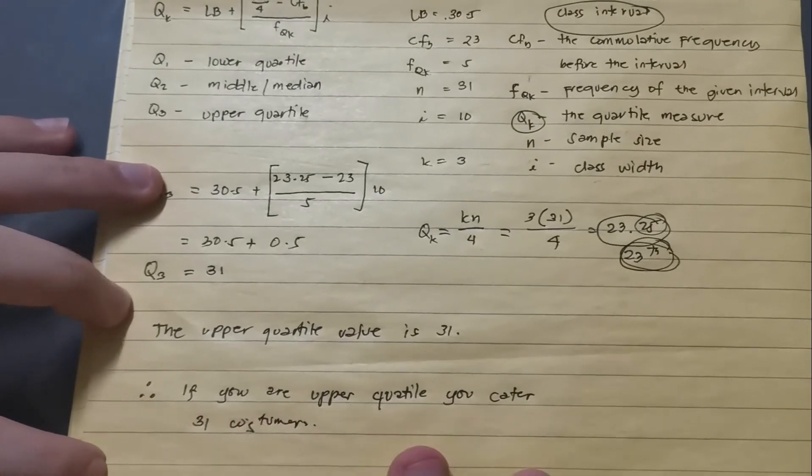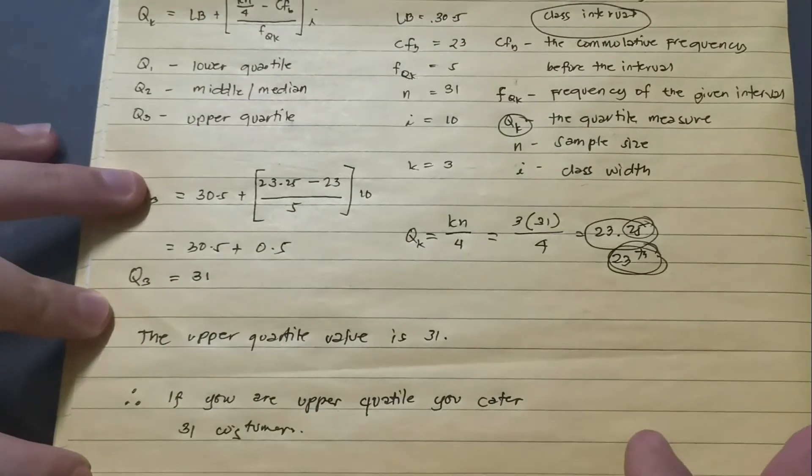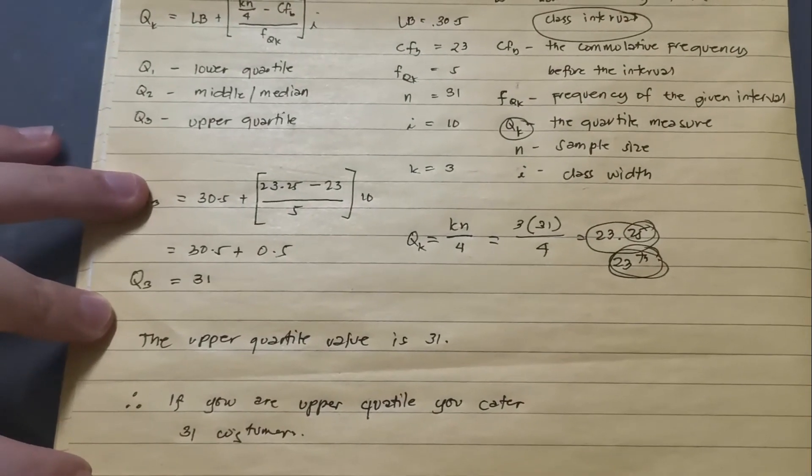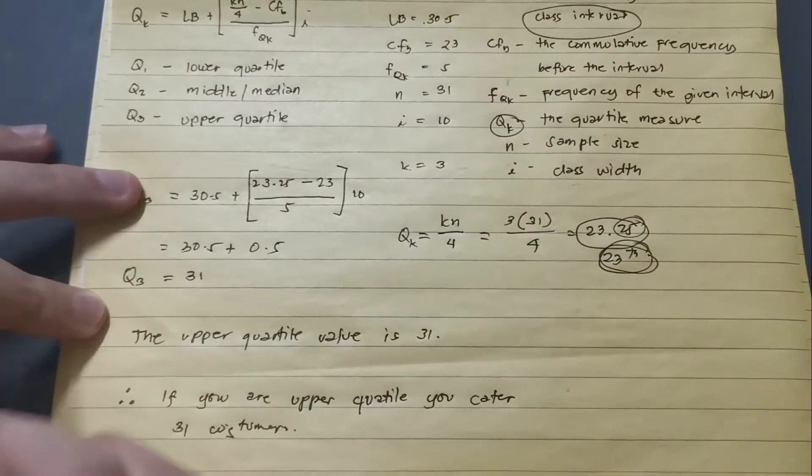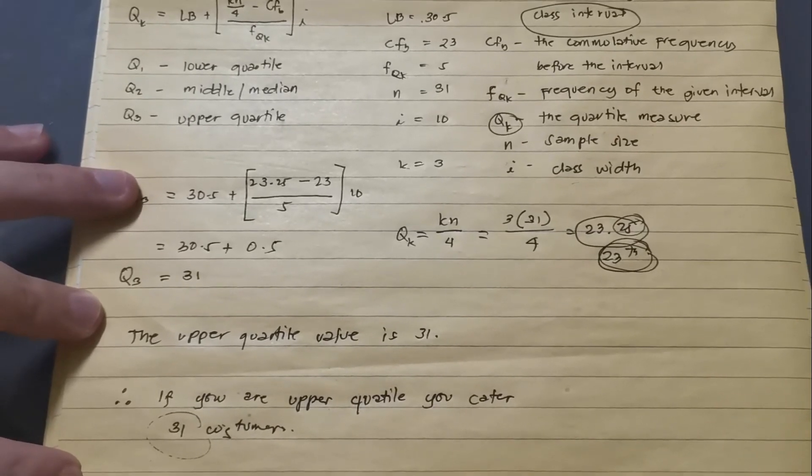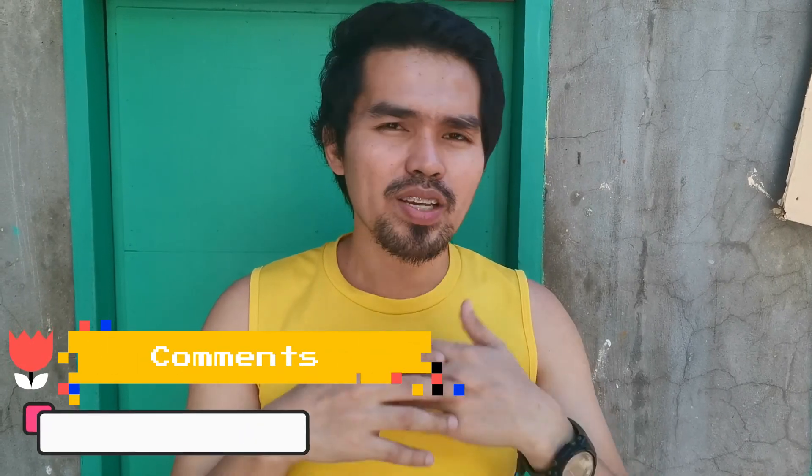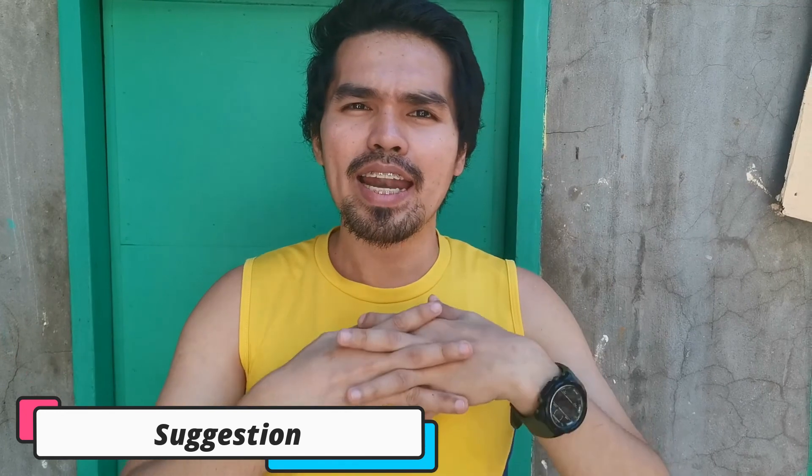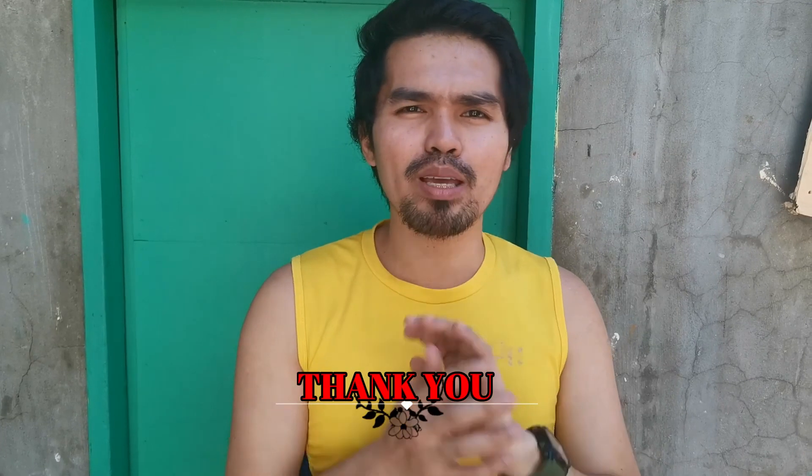That's it. Thank you so much. That's the whole process of our computation. I have shown you the step-by-step procedure and how to solve for the quartile value of a given distribution. Now, if you have some comments, suggestions, just leave it in the comment section. And then, let me know what are your feelings about my explanation. With that, guys. Thank you so much for being with me in this another episode. See you and bye for now.